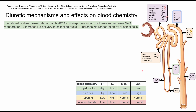The first category is loop diuretics, shown in green. Loop diuretics like furosemide act on the sodium-potassium-chloride co-transporter in the loop of Henle, represented by this arrow in this box here. When they inhibit that transporter, they decrease sodium chloride reabsorption from this site, which increases sodium delivery to the collecting tubules later in the nephron.